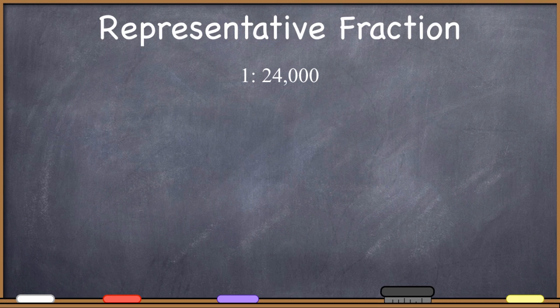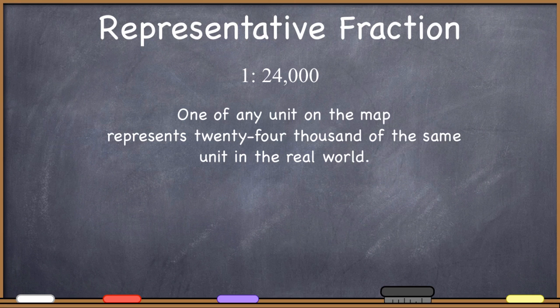Here is the 1, the colon which is read as 'to', and 24,000. So 1 to 24,000. This is a perfectly good representative fraction, and it means that one of any unit on the map represents 24,000 of the same units in the real world.